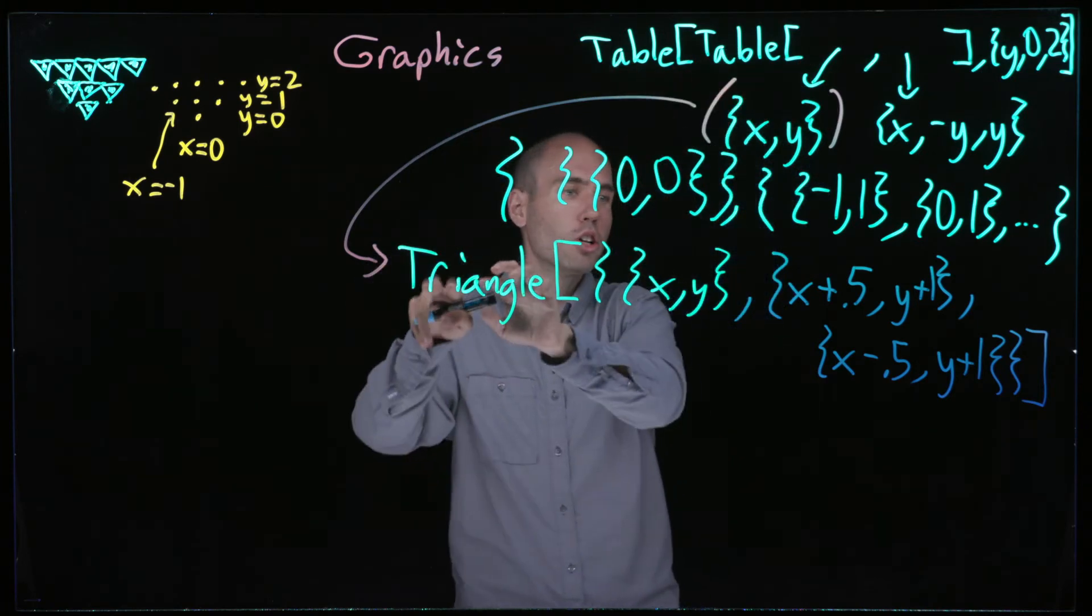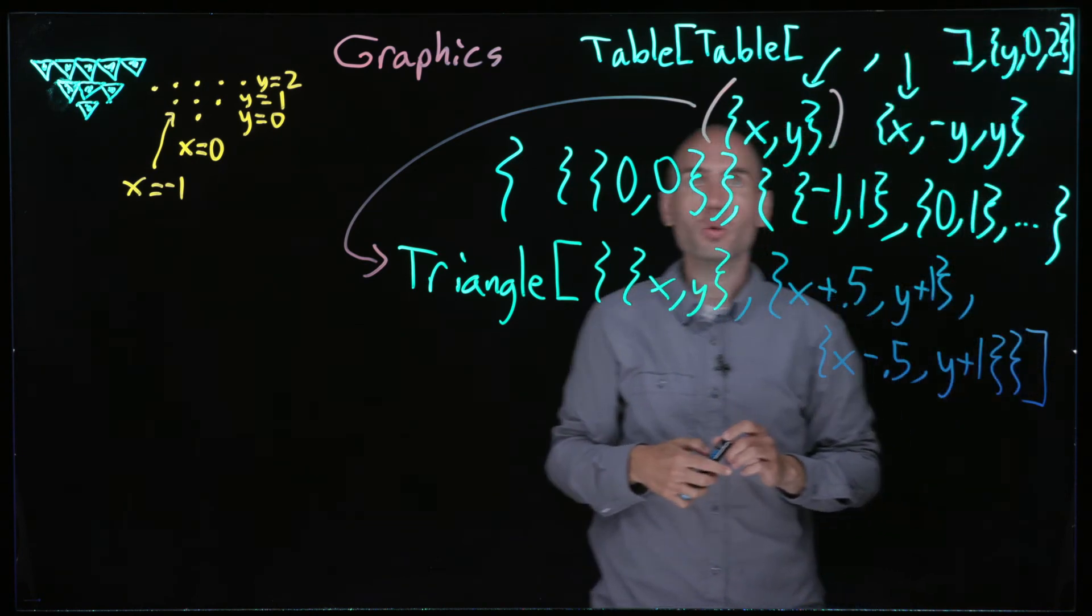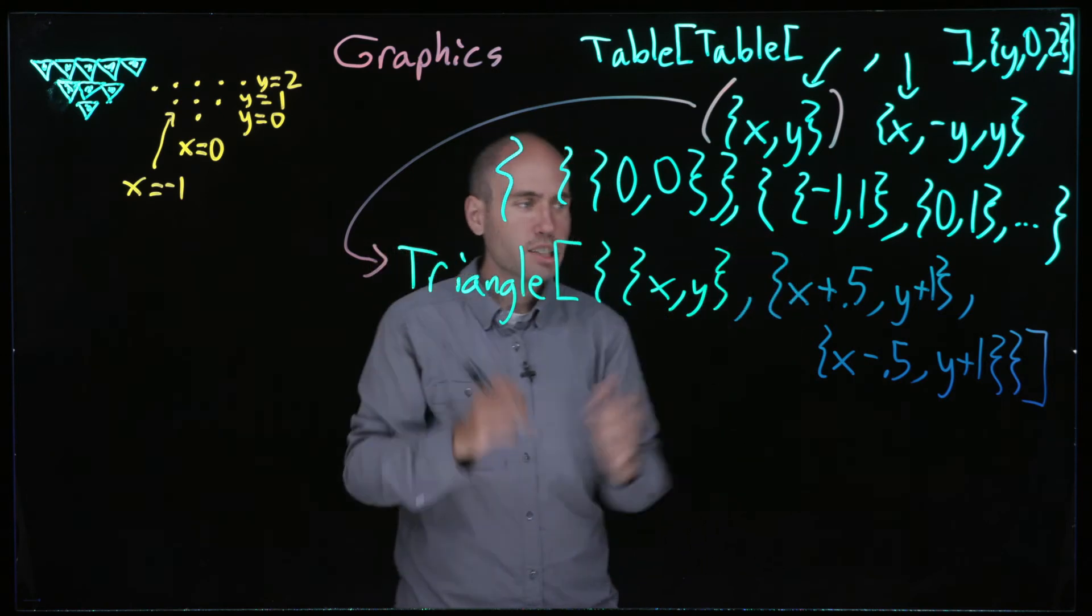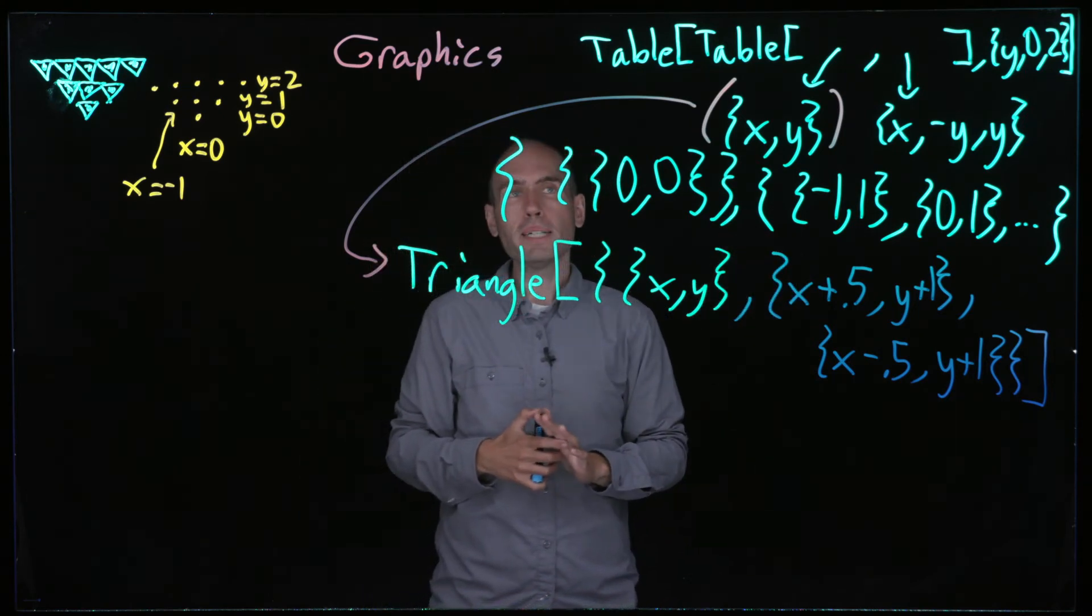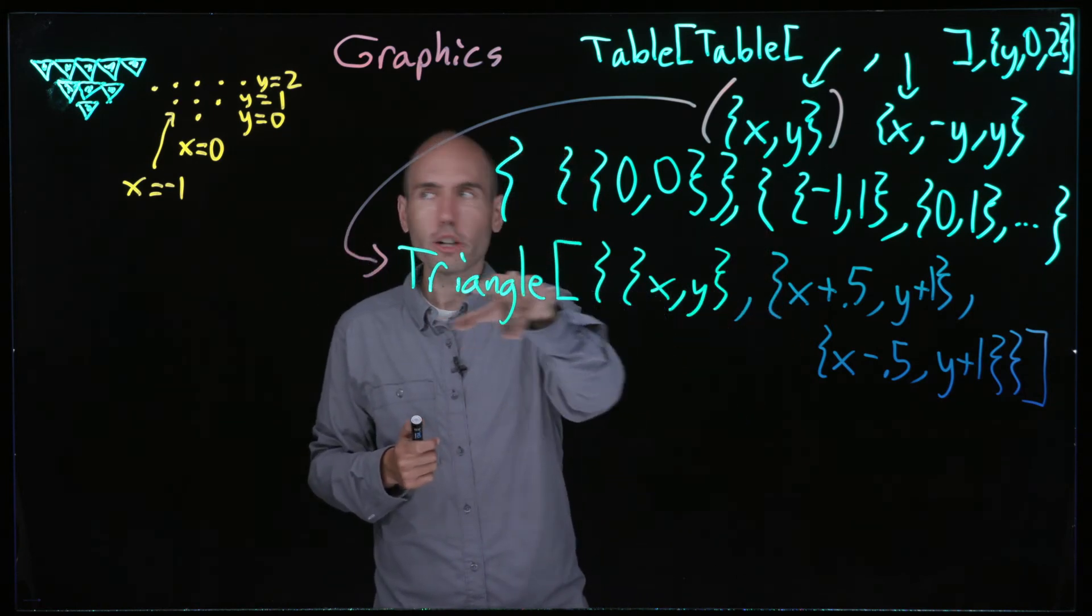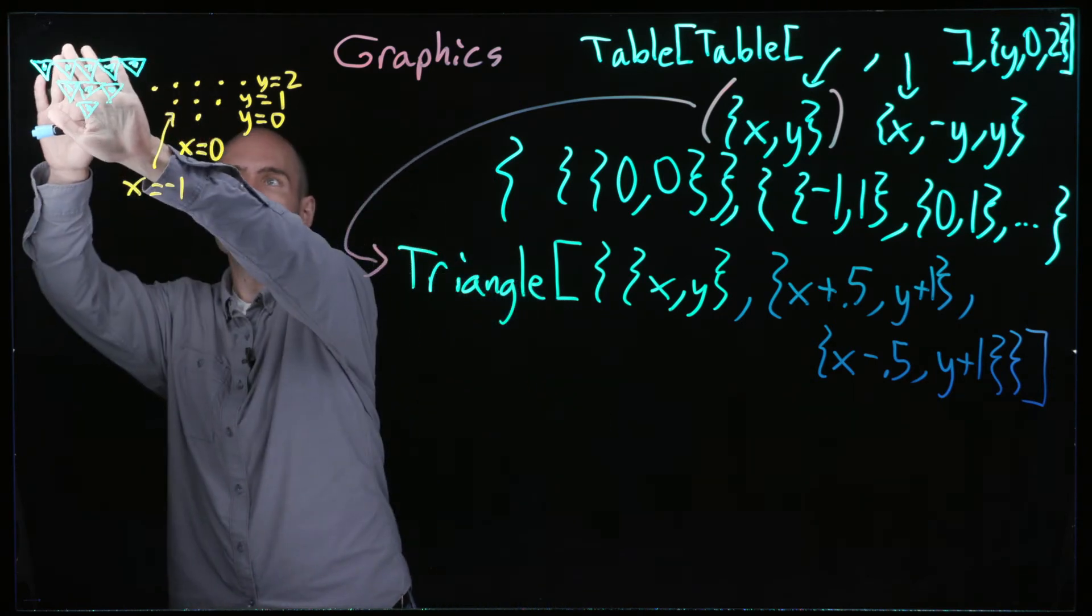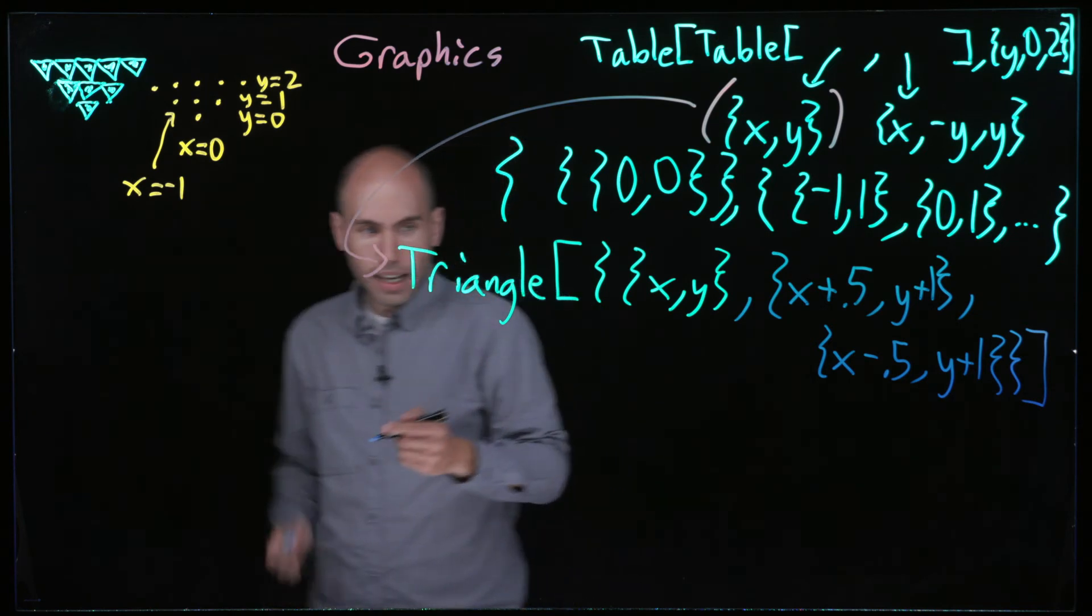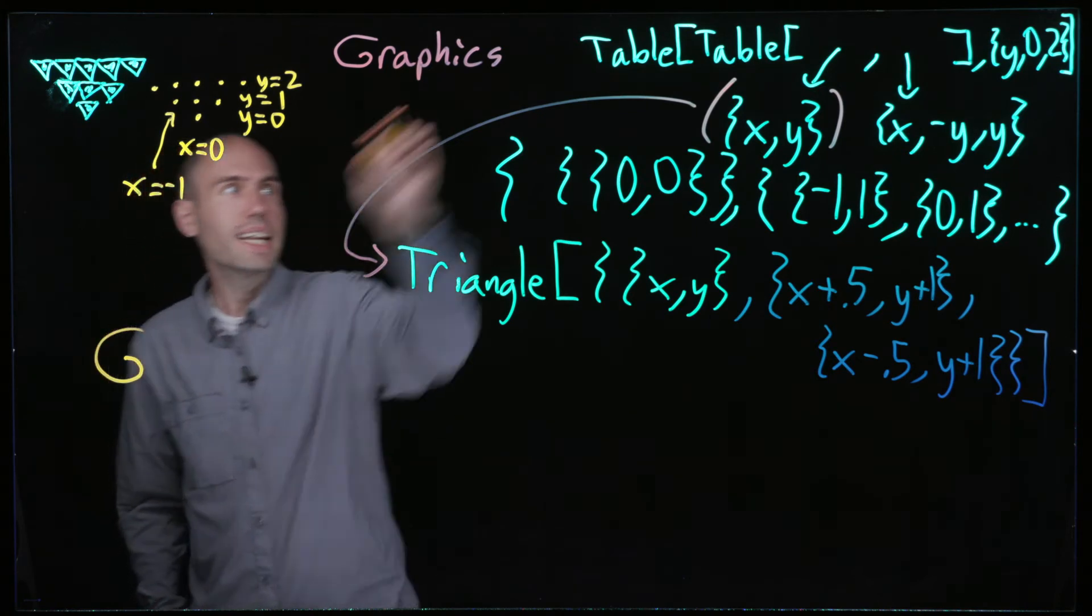Now we're basically done. But if you just type this stuff, this table, table, triangle, this junk, x negative y, y, y is 0 to 2, you can tell that it gets complicated fast. But as long as you build it up piece by piece, it'll almost work. The problem is, if we evaluate that, what are we going to see? We're going to see this big list of the word triangle a bunch of times, and that's not what I want.